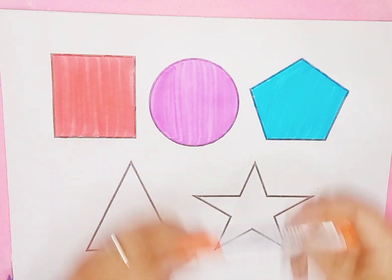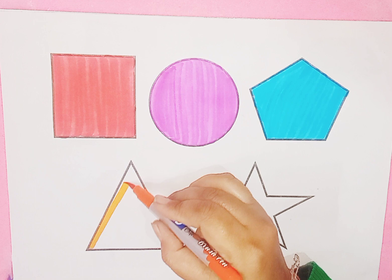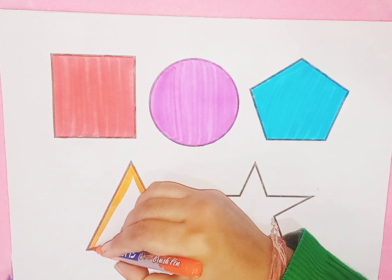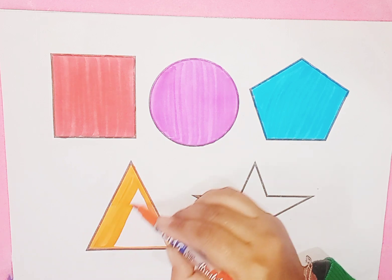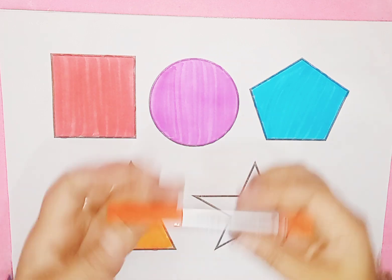Orange color, triangle. Twinkle, twinkle little star, how I wonder what you are. Triangle with orange color.